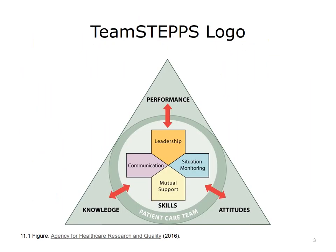Note the TeamSTEPPS logo shown on the slide, paying particular attention to the four skills located inside the circle: Leadership, Situation Monitoring, Mutual Support, and Communication. Each of these skills is considered to be both teachable and learnable. The interaction between the team-related outcomes of attitudes, performance, and knowledge with these four skills is illustrated by the red bidirectional arrows.